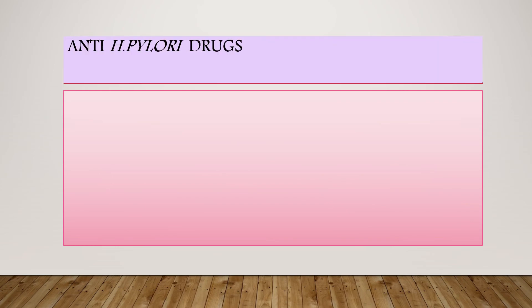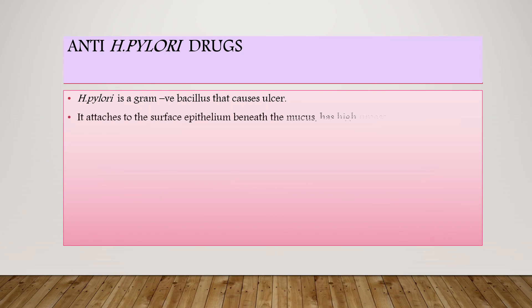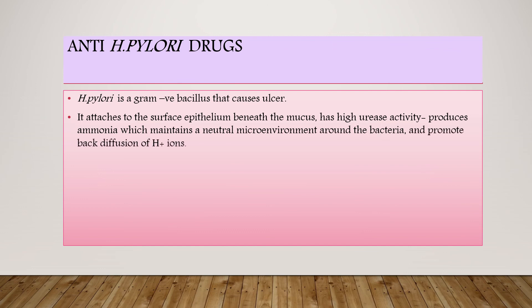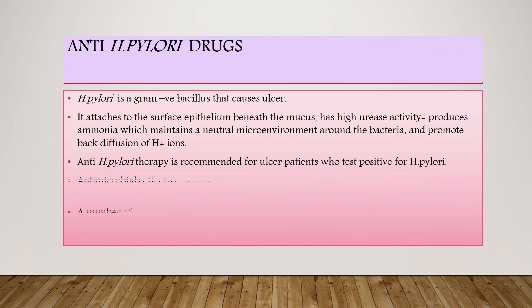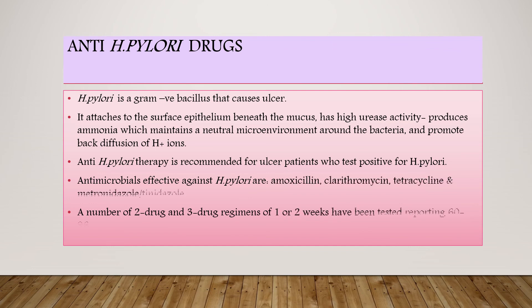Anti-H. pylori drugs are used to treat ulcers caused by Helicobacter pylori. H. pylori is a gram-negative bacillus that causes ulcers. It attaches to the surface epithelium beneath the mucus and has high urease activity, producing ammonia which maintains a neutral microenvironment around the bacteria and promotes back-diffusion of H+ ions. Anti-H. pylori therapy is recommended for ulcer patients who test positive for H. pylori.